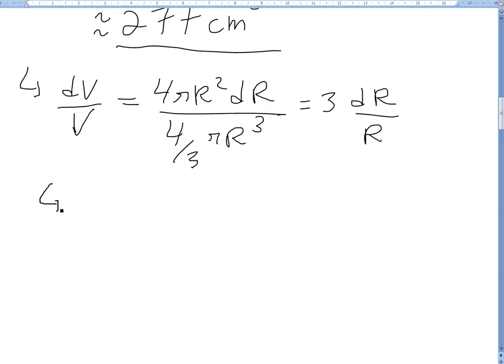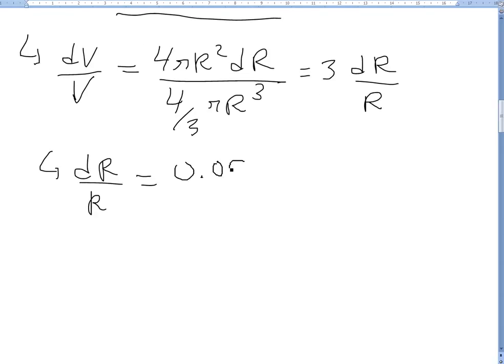So we know that dR over R equals 0.05 divided by 21. And if you plug this in the calculator we're going to get 0.0024, so around there.